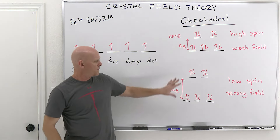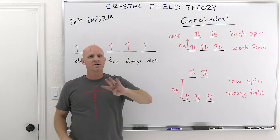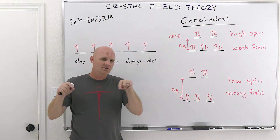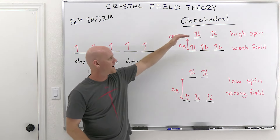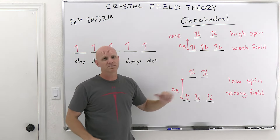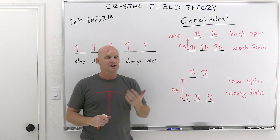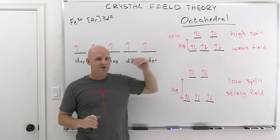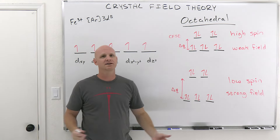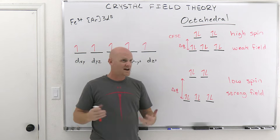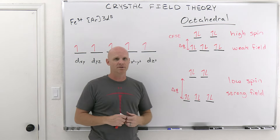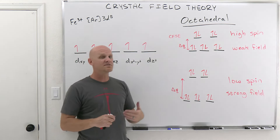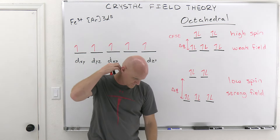So: from d⁴ to d⁷ is when you get distinct high spin and low spin complexes. With 0, 1, 2, 3, 8, 9, or 10 d electrons, there is no distinct high spin versus low spin. High spin and low spin only exist as distinguishable cases for central metal ions that have 4 to 7 d electrons.